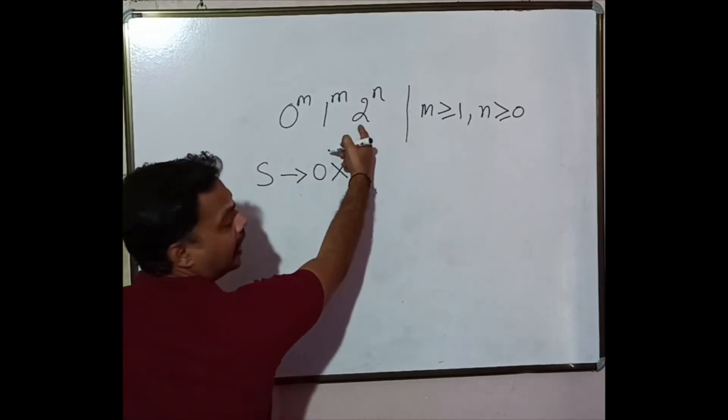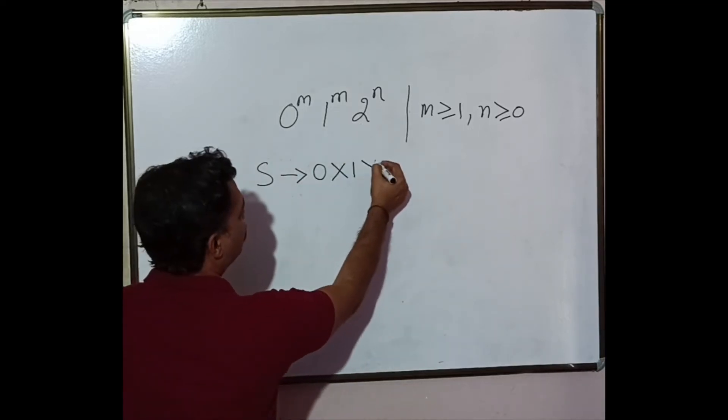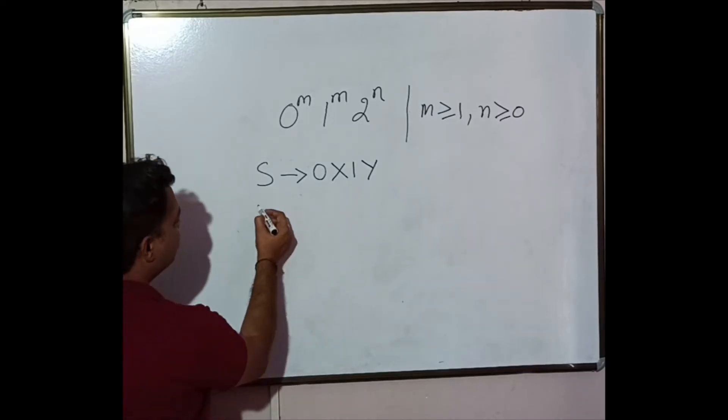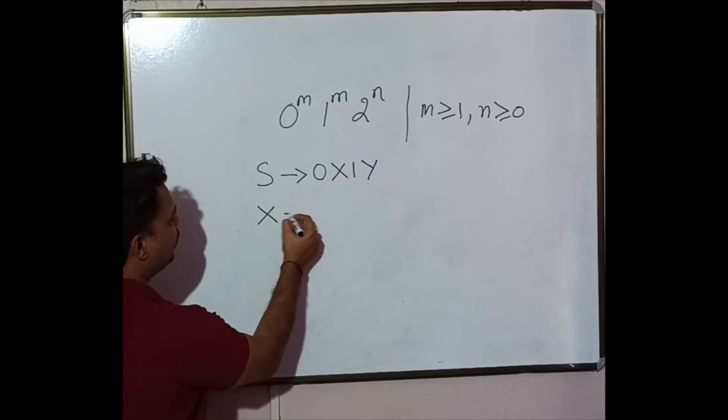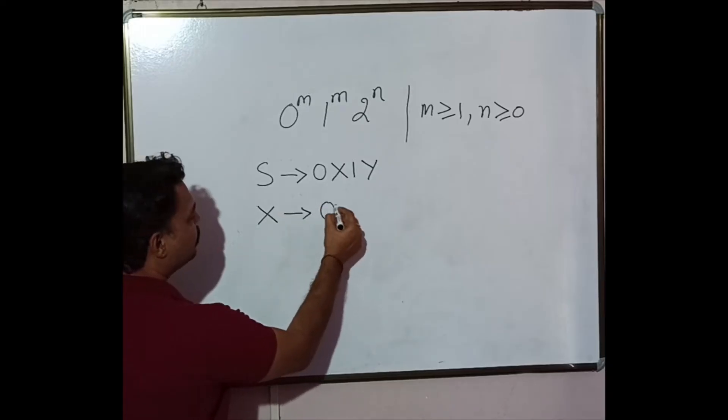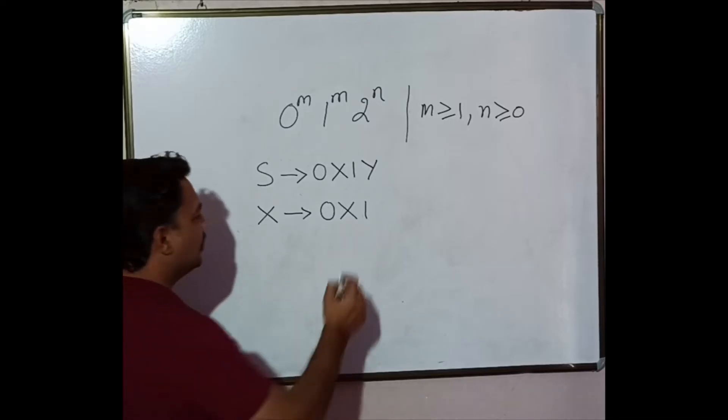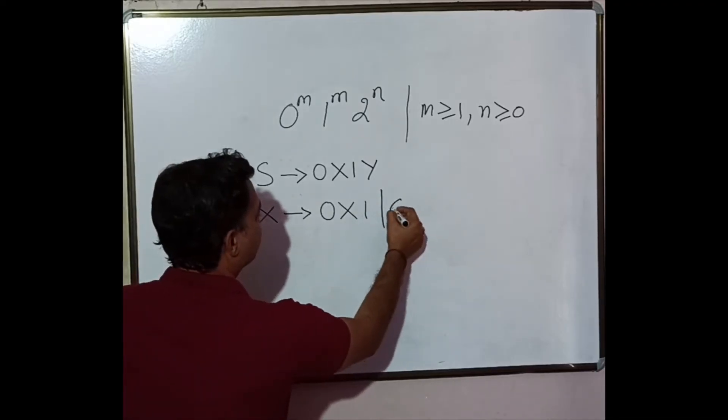Next, in order to handle this particular scenario, we need one more variable that is y. Now let us further extend x. X will once again go for producing more number of 0s equal to number of 1s, and we can stop this recursion using epsilon.